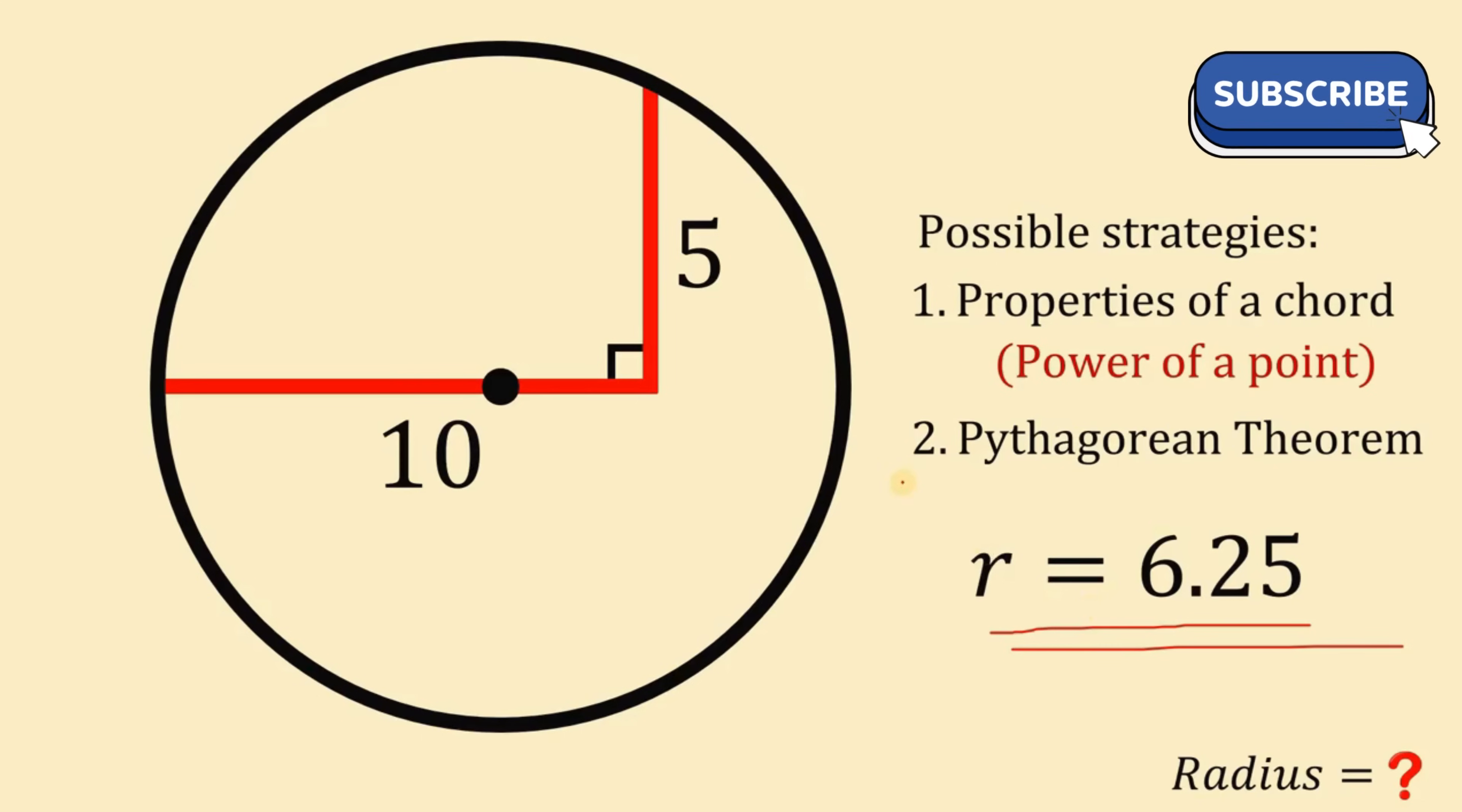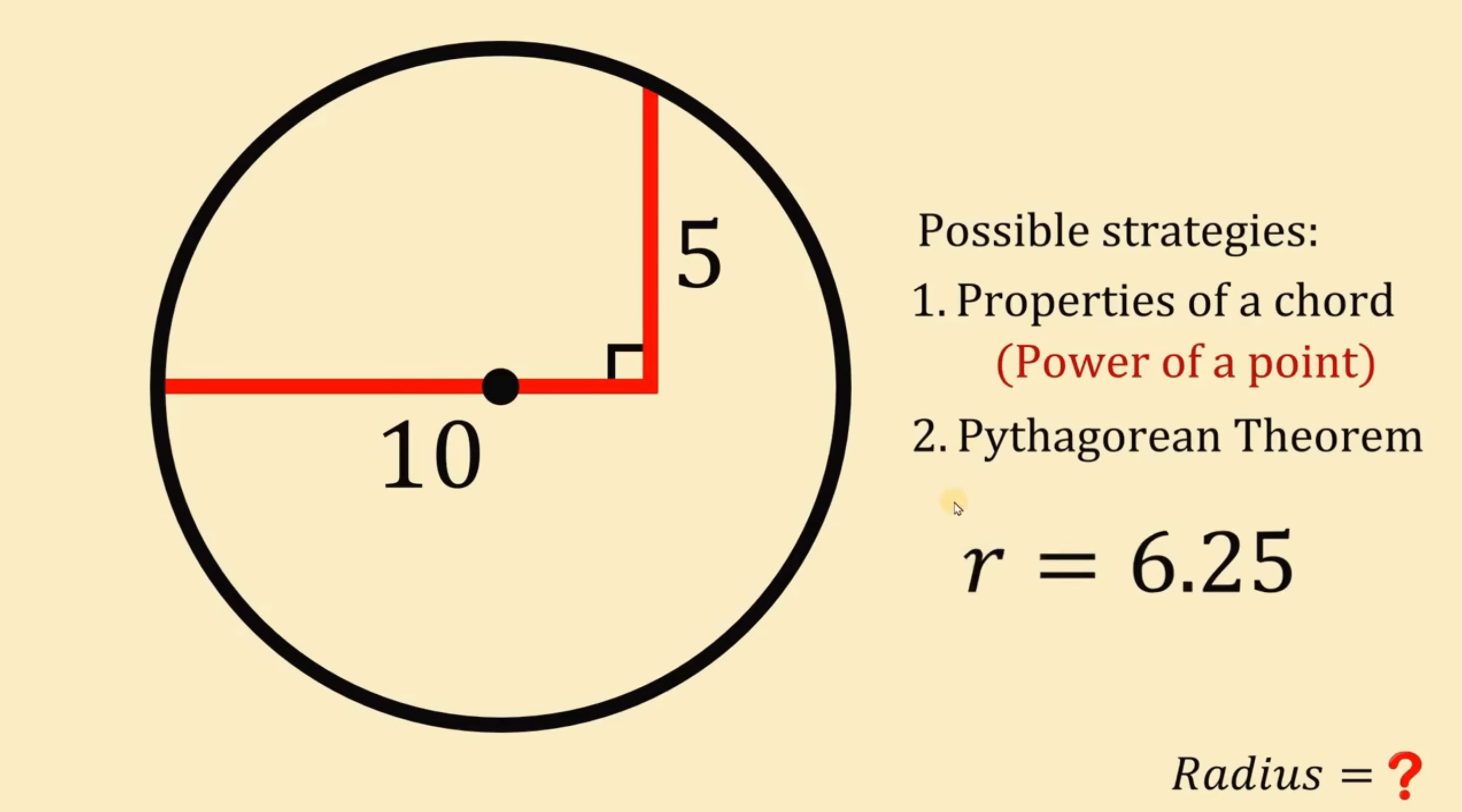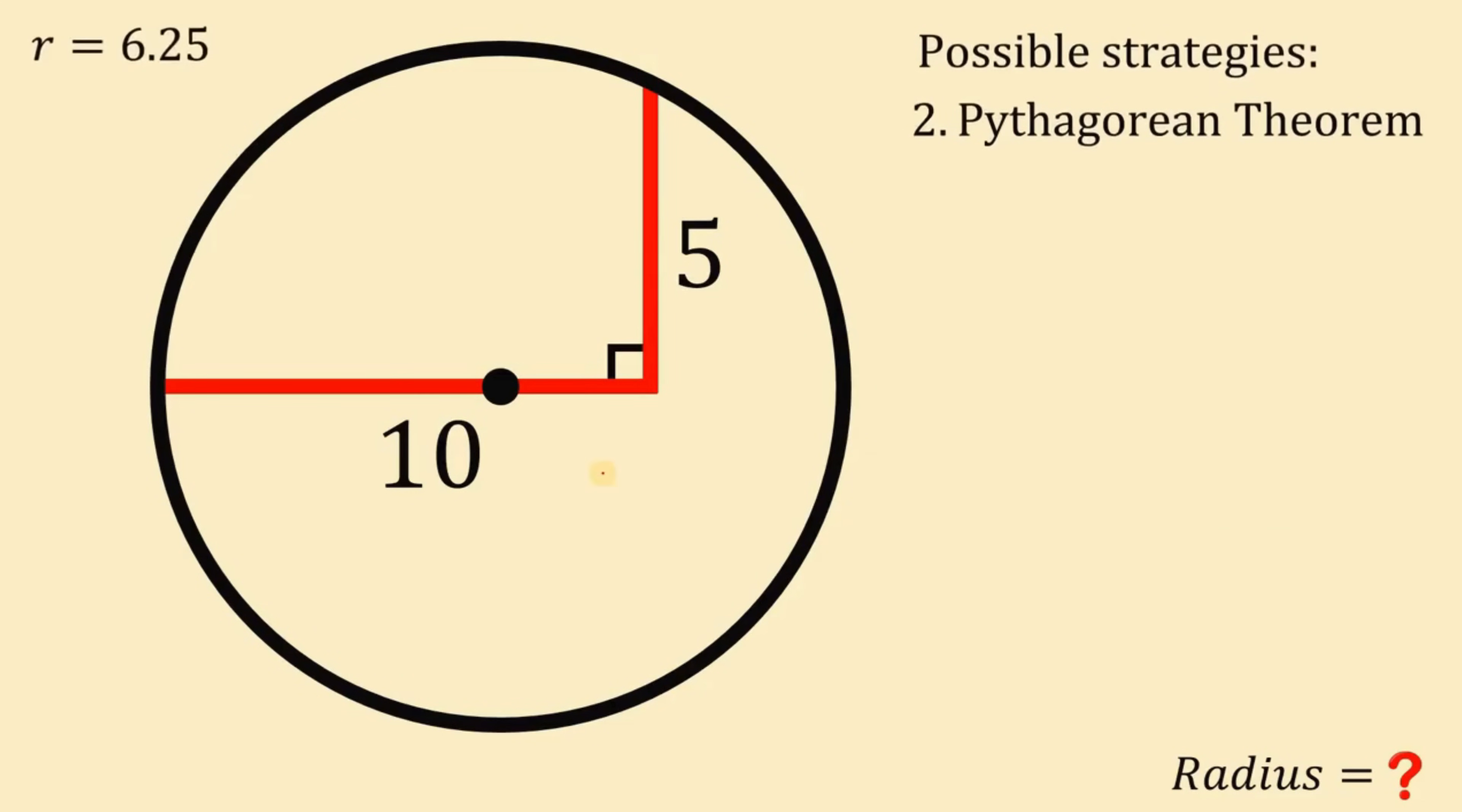Now, how about the second strategy, which is the Pythagorean theorem? So how can we use the Pythagorean theorem in this kind of question? So to use the Pythagorean theorem, what we're going to do is from this center, let's draw the radius of the circle and let's call this as R.